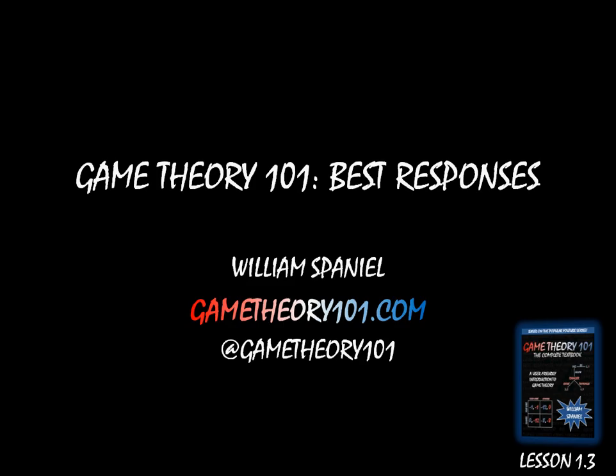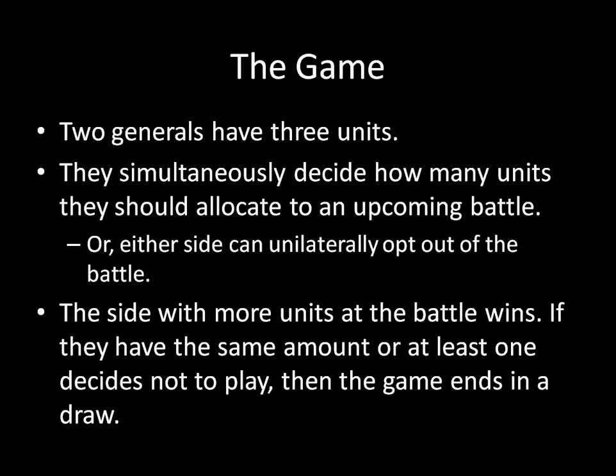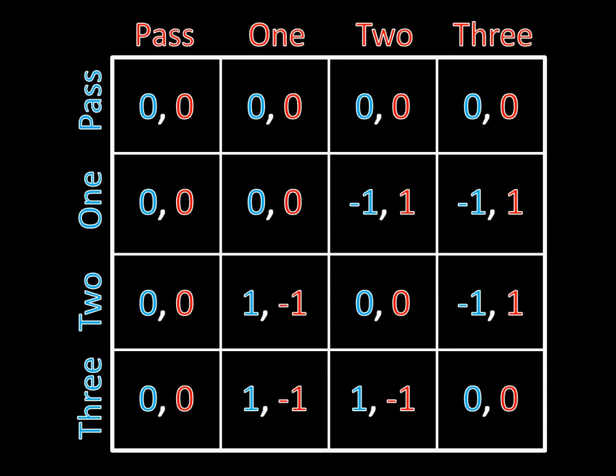This will be the last video that we do on Lesson 1.3. The game looks like this: we have two generals and they each have three units. These generals are going to simultaneously decide how many units they should allocate to an upcoming battle, or either side can unilaterally opt out of the battle. The generals can basically say they'll pass and move on. The side with the most units is going to win, but if the sides have the same amount or one decided not to play, then the game just ends in a draw. We call this game Safety in Numbers.